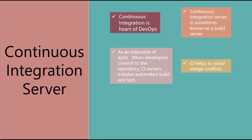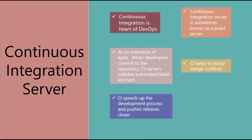CI helps avoid merge conflicts and integration issues in your code. It also speeds up the development process and pushes releases closer, because whenever you make a commit and run an automated build, you immediately know the issues and conflicts and can fix them. It's more of a continuous feedback loop as part of the CI server. I have a lot of videos on Jenkins and GitLab here on my channel.